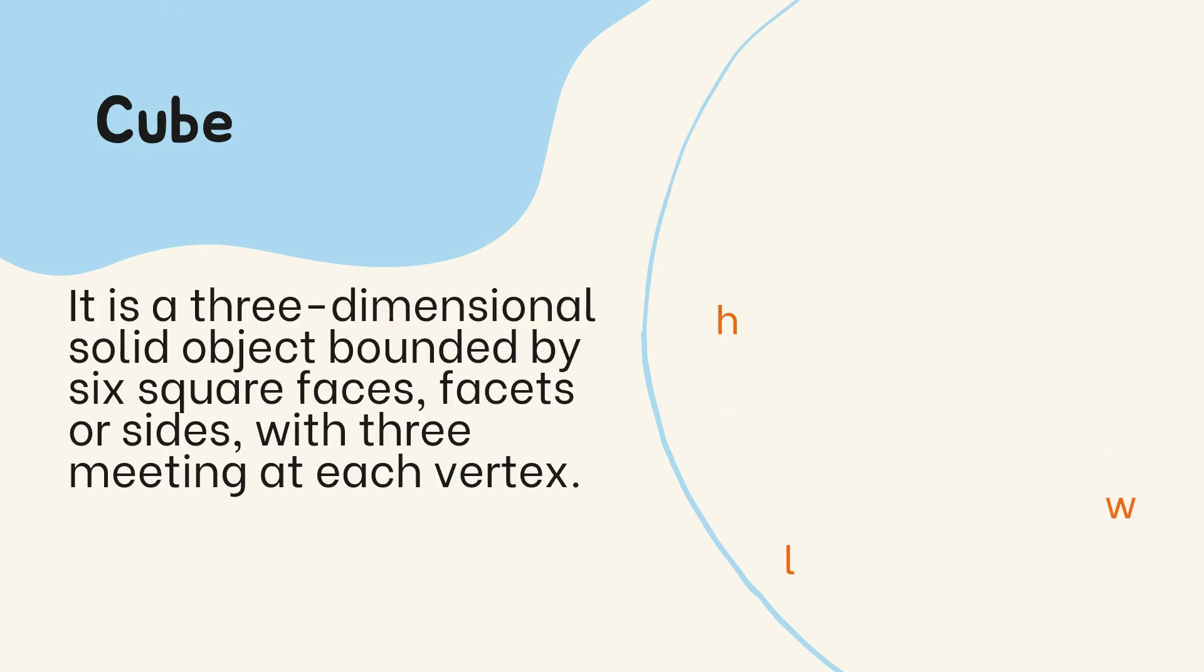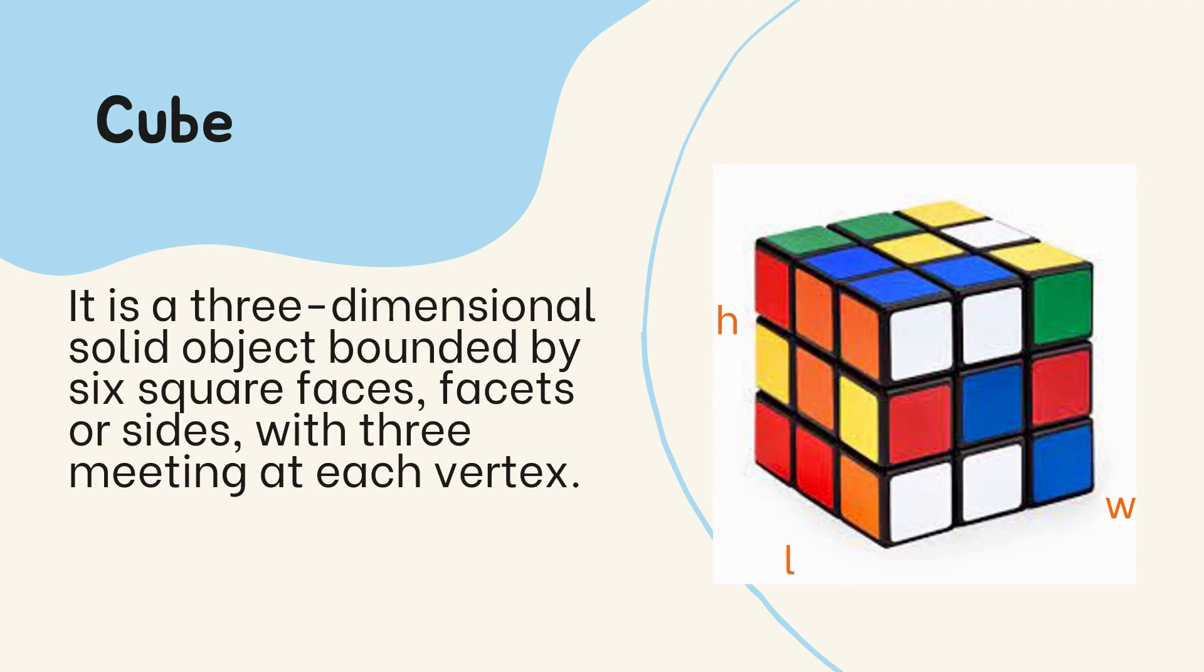For us to visualize what is volume, we have here an example of cube, which is a Rubik's cube. We have the height, length, and width. For height, we have three cubic units. For the length, we have also three. And for the width, we have three. We're going to multiply it three times three times three. So we have 27 cubic units.